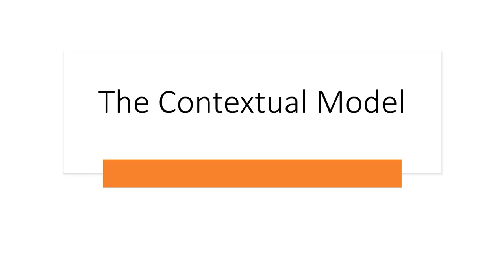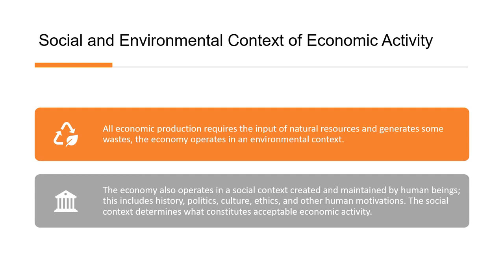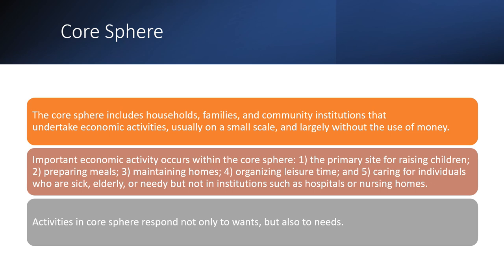The contextual model recognizes that economic activity is also influenced by social and environmental context. All economic production requires the input of natural resources and generates some waste, so the economy operates in an environmental context. The economy also operates in a social context — including history, politics, culture, ethics, and other human motivations — which determines what constitutes acceptable economic activity. Economic activity occurs in three spheres: the core sphere, the business sphere, and the public purpose sphere. The core sphere includes households, families, and community institutions that undertake economic activities usually on a small scale and largely without the use of money.